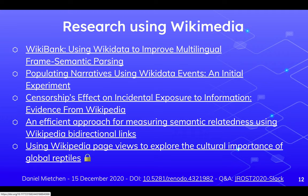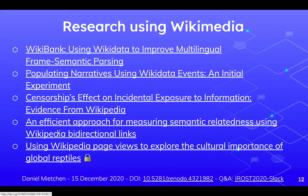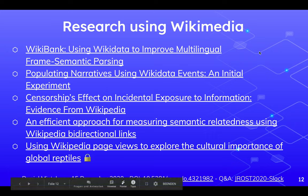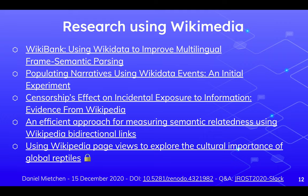There's also research using Wikimedia platforms. One example uses Wikidata to improve semantic parsing. You can populate narratives with Wikidata events, or investigate censorship effects by looking at Wikipedias that are blocked in certain countries. Or you can use the link pattern on Wikipedia as a measure of semantic similarity between concepts, or look at Wikipedia as a measure of the cultural importance of global reptiles. Notably, most of these papers are not openly licensed and some are behind a paywall — even though they consciously use Wikimedia platforms as an open resource, they don't necessarily give back to that ecosystem.